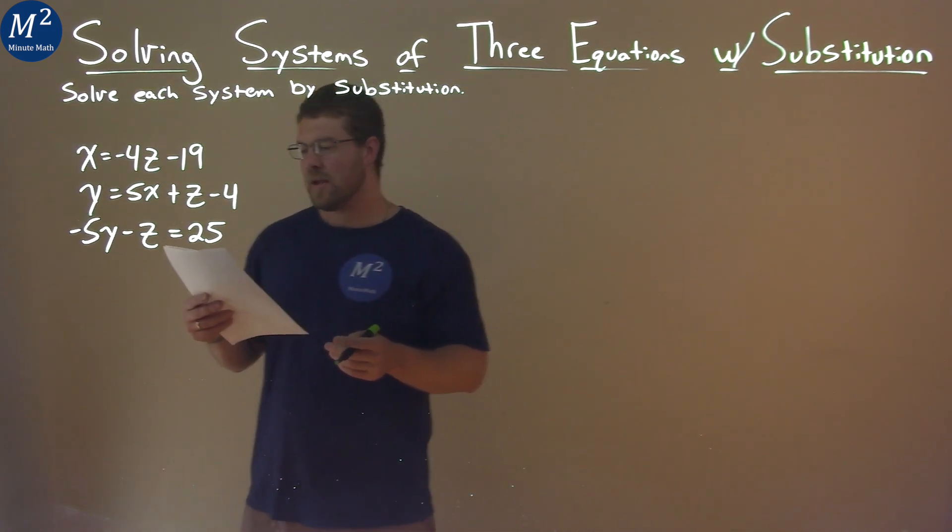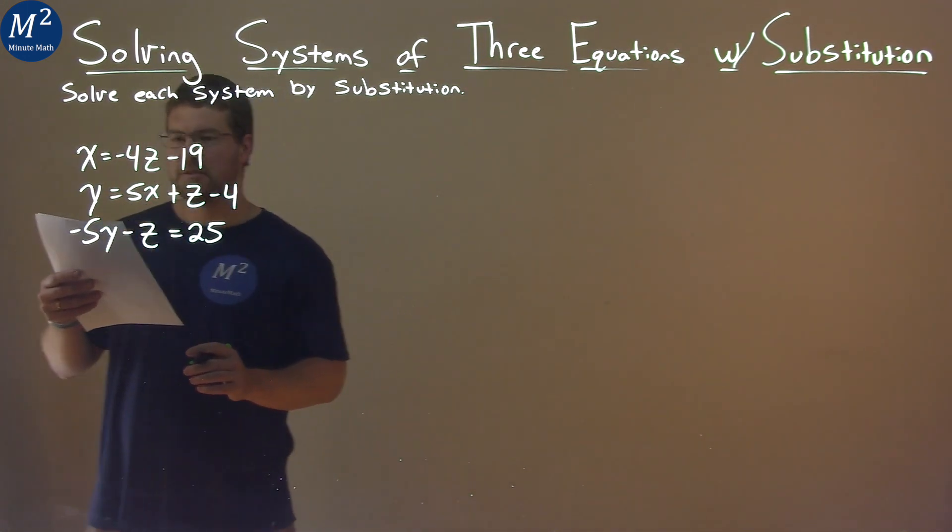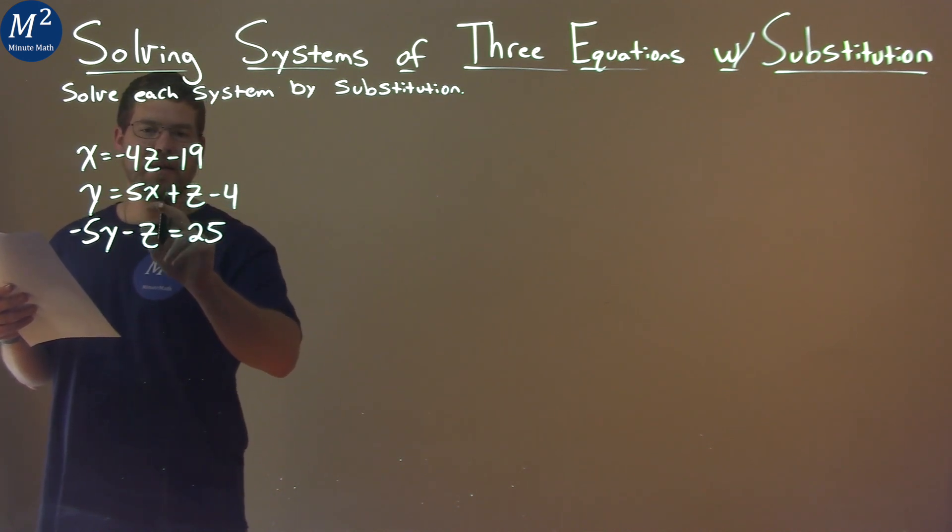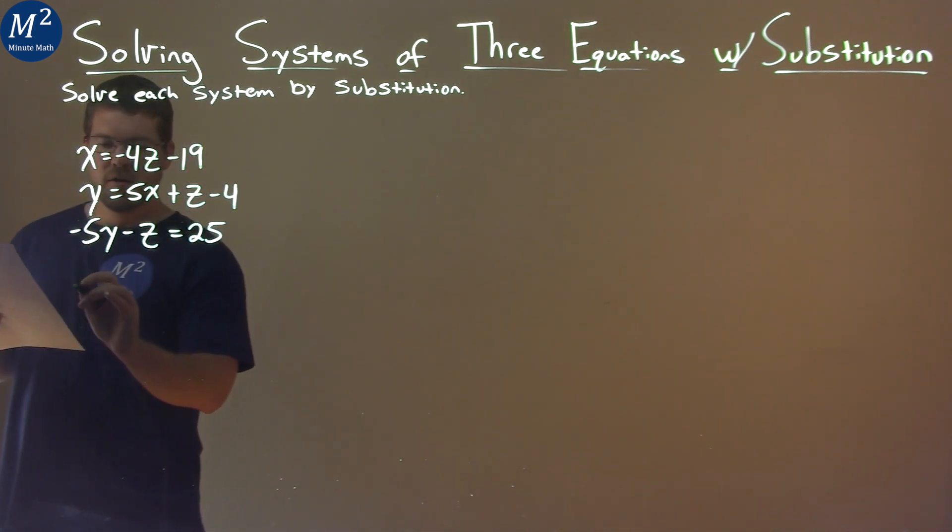The first thing I'm looking at is this y equals 5x plus z minus 4. The reason I'm looking at that is because I can substitute this x in, and now I have y equal to just z's. Putting this negative 4z minus 19 in for that x.